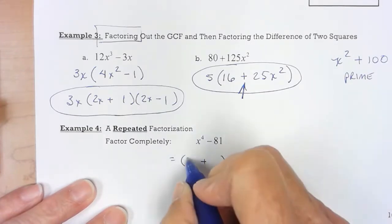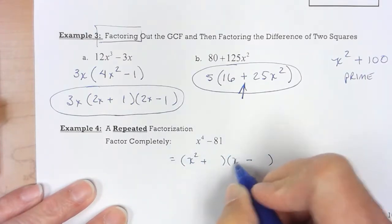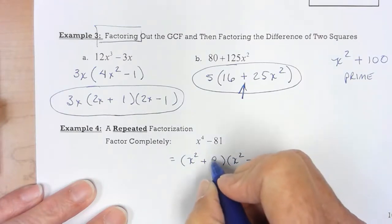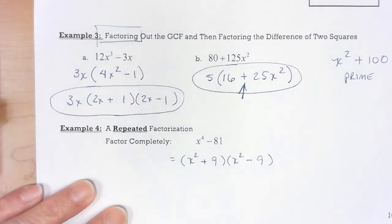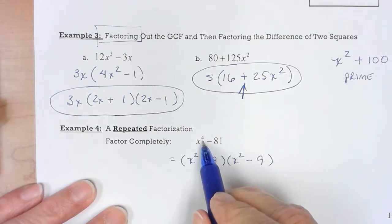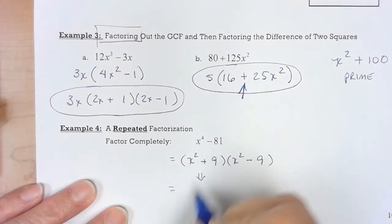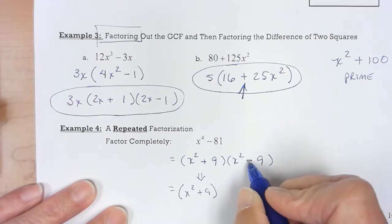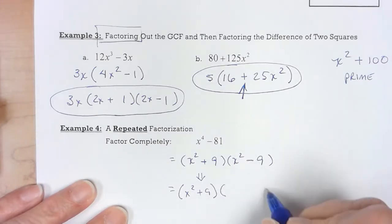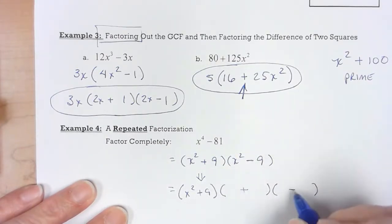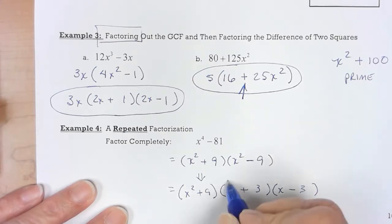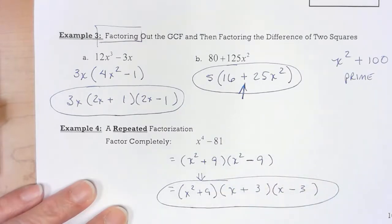Square root of x to the fourth would be x squared. Square root of 81 is 9. Anytime you have an exponent larger than 2, beware. This will go again. This one is as far as it can go. This one is a difference of perfect squares. Now, that's my final answer.